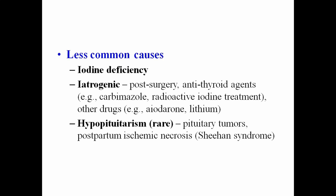For synthesis of thyroid hormone, two precursors are needed: thyroglobulin (a protein synthesized in the thyroid gland using different amino acids) and iodine, which must be supplied from dietary sources. Iodine deficiency hypothyroidism is the most common form of hypothyroidism worldwide, especially in regions where soil and water iodine content is poor. When sufficient iodine is not present, thyroid hormone biosynthesis is altered, leading to hypothyroidism.